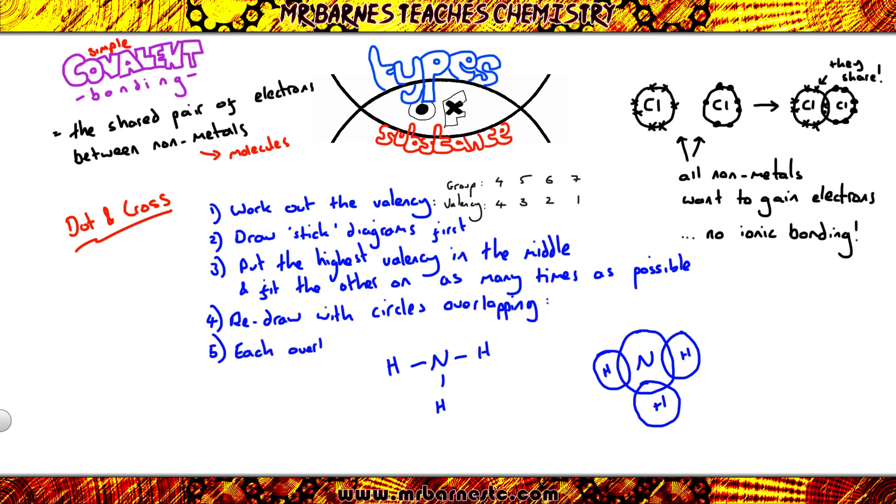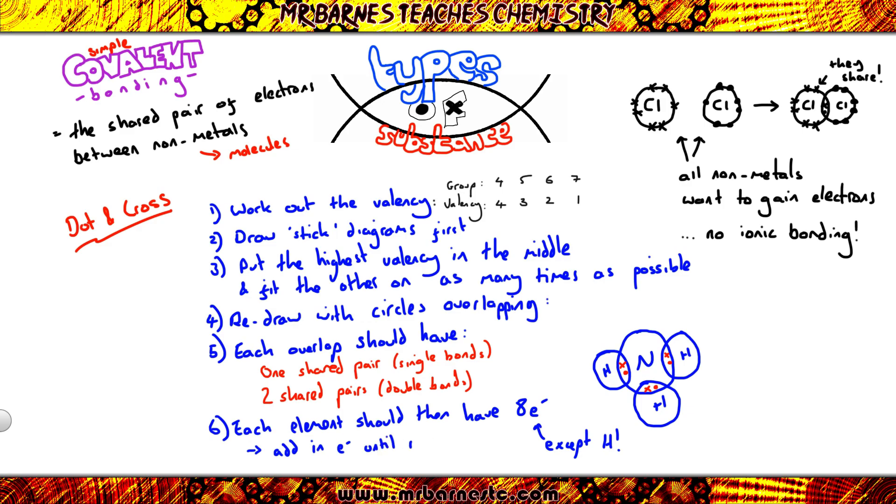Now each overlap should be a dot and cross, if there's a single line it's one dot and cross, if it's a double bond or two lines you get two shared pairs, so two dots and two crosses. Because my NH3 has only got single bonds I put one dot and one cross in every overlap. And then my final step is I must make sure every element has eight electrons in the outer shell, with the exception of hydrogen which should only have two. So I'm going to add in electrons onto the outer shell not in the overlap until I get up to eight for everything other than hydrogen. So you can see for my nitrogen here I've got six electrons, I need two more to give me my five crosses. Nitrogen should have five crosses because it's in group five.